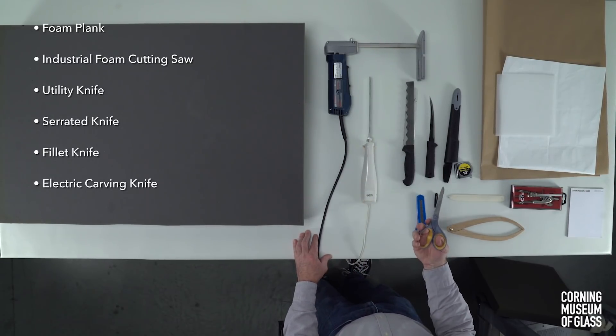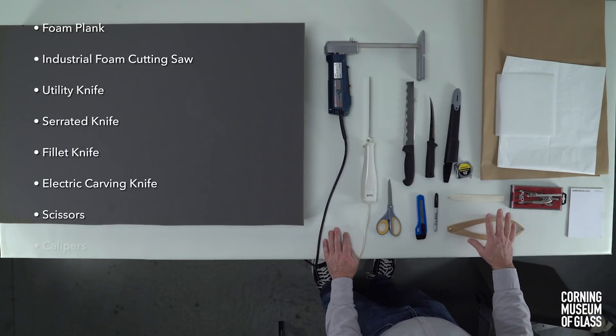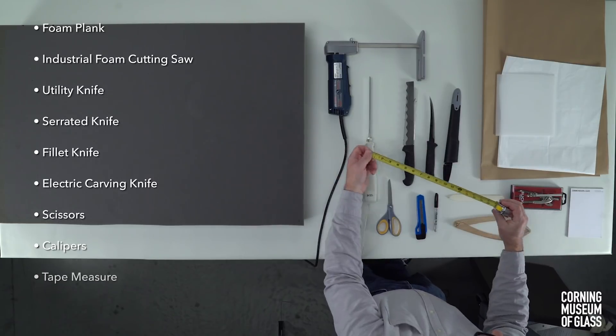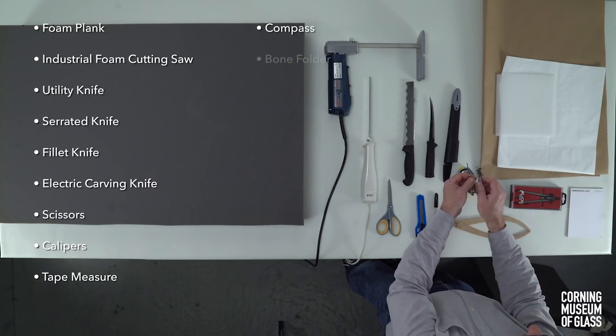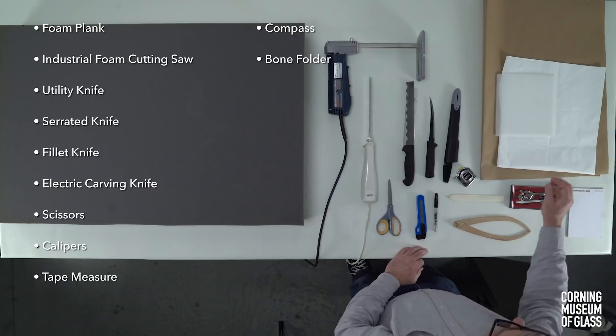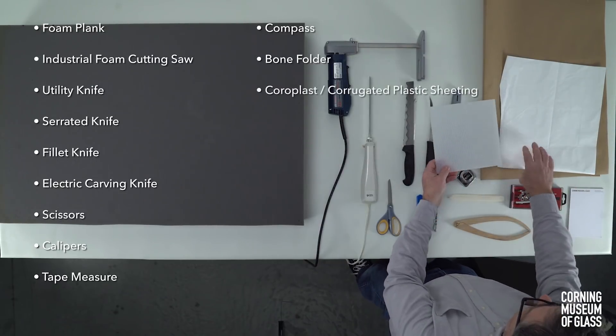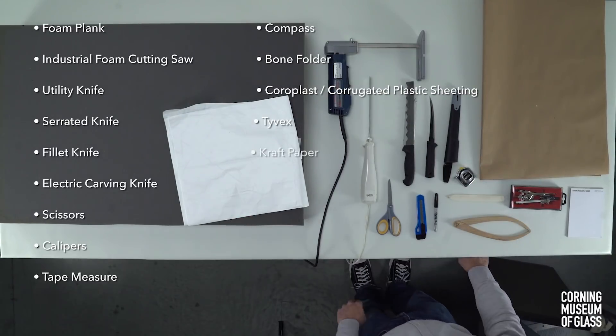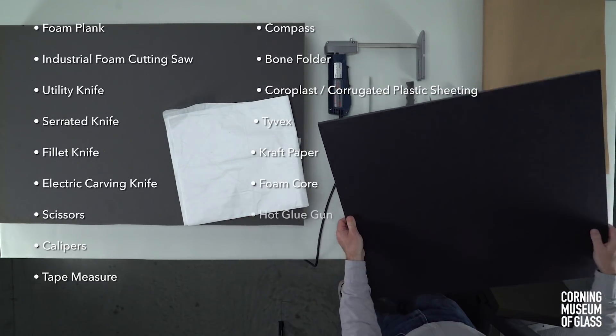Other supplies may include scissors, calipers, tape measure, compass, bone folder, coroplast or corrugated plastic sheeting, Tyvek, craft paper, foam core, and a hot glue gun.